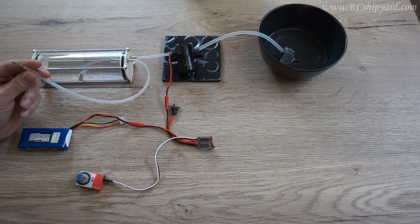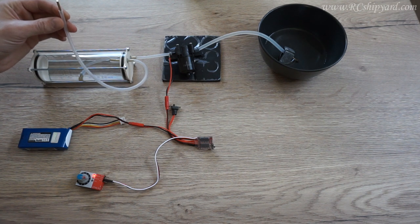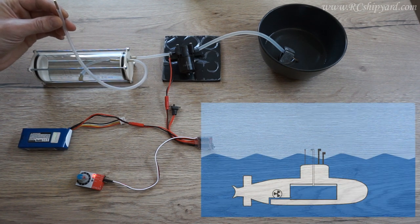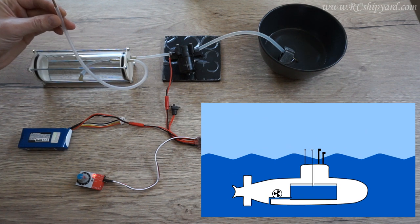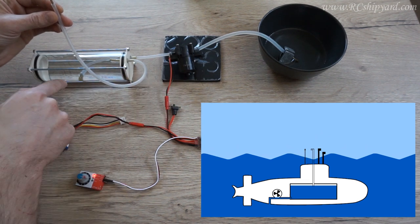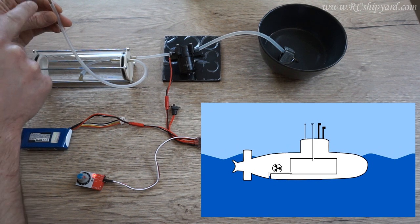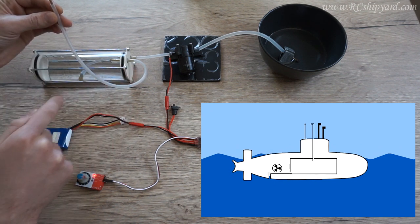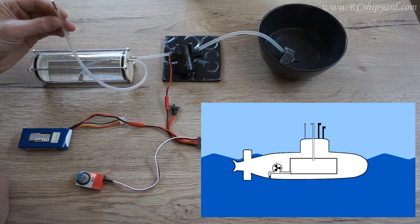So now we want to surface the model and we have to deal with two scenarios. The first scenario is the easier one: you are running your model on periscope depth and the snorkel is above the water surface. In this scenario when we turn on the pump, the pump will pump out the water and the air will get inside again to equalize the pressure. That's an easy scenario.